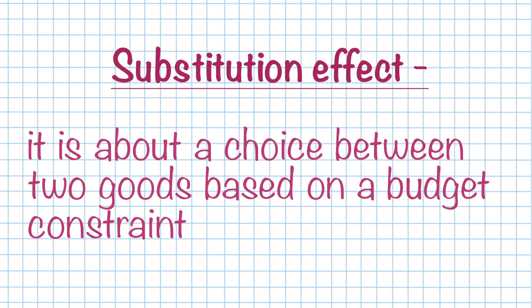The substitution effect, in contrast, is about a choice between two goods. It really deals with choice economics and budget economics. If you have a simple model of two goods, you have a budget constraint because of the problem of scarcity. Let's say I have $20 a week to spend on books and ice cream. So I can buy maybe a few Haagen-Dazs cookies and cream ice cream, or I can buy some books. So I have a choice between these two products and I have a budget constraint.